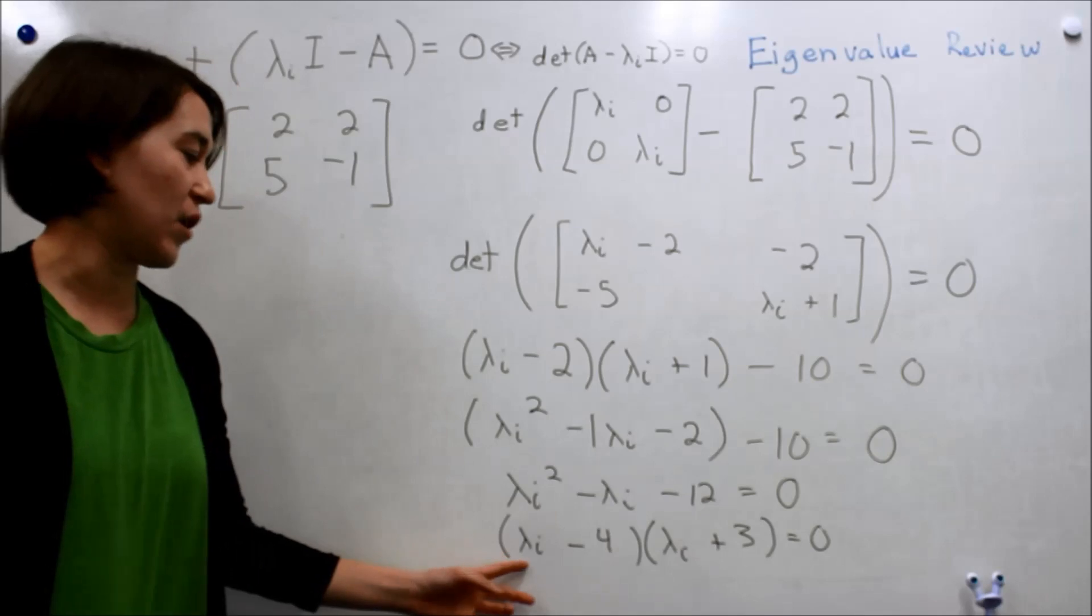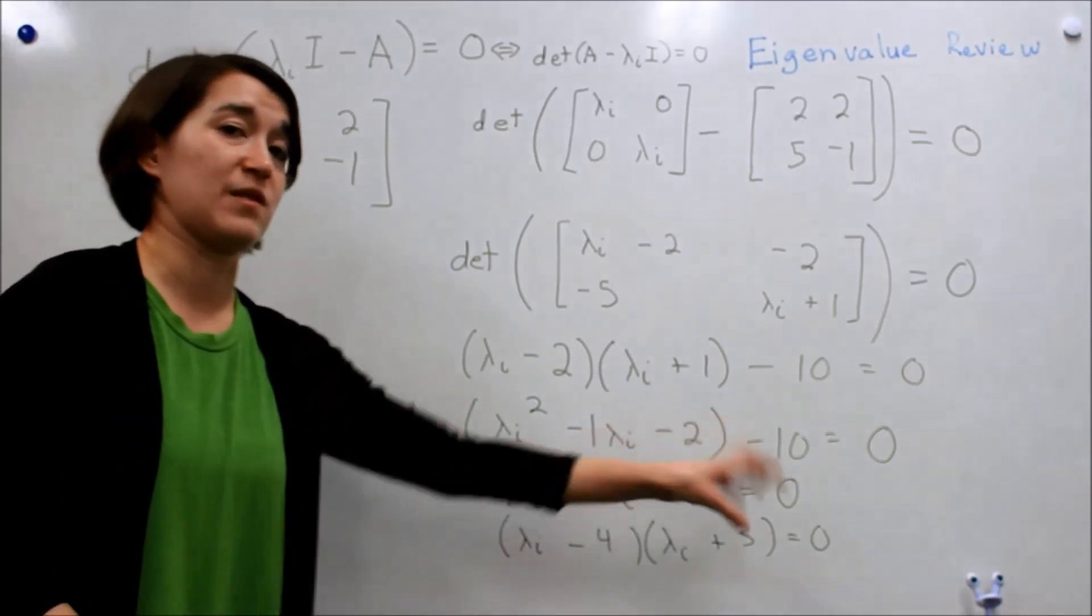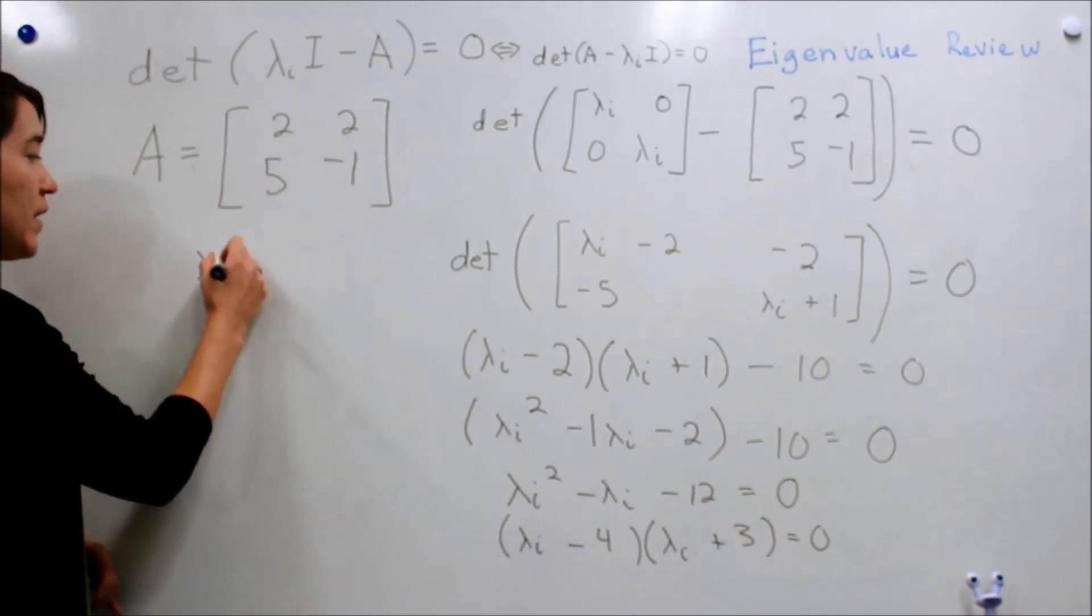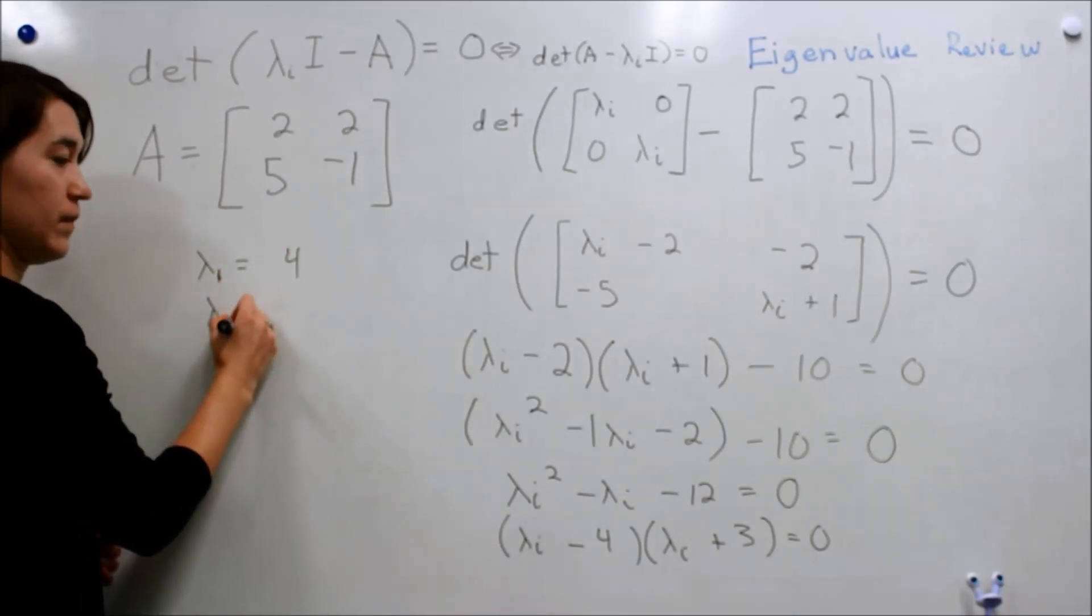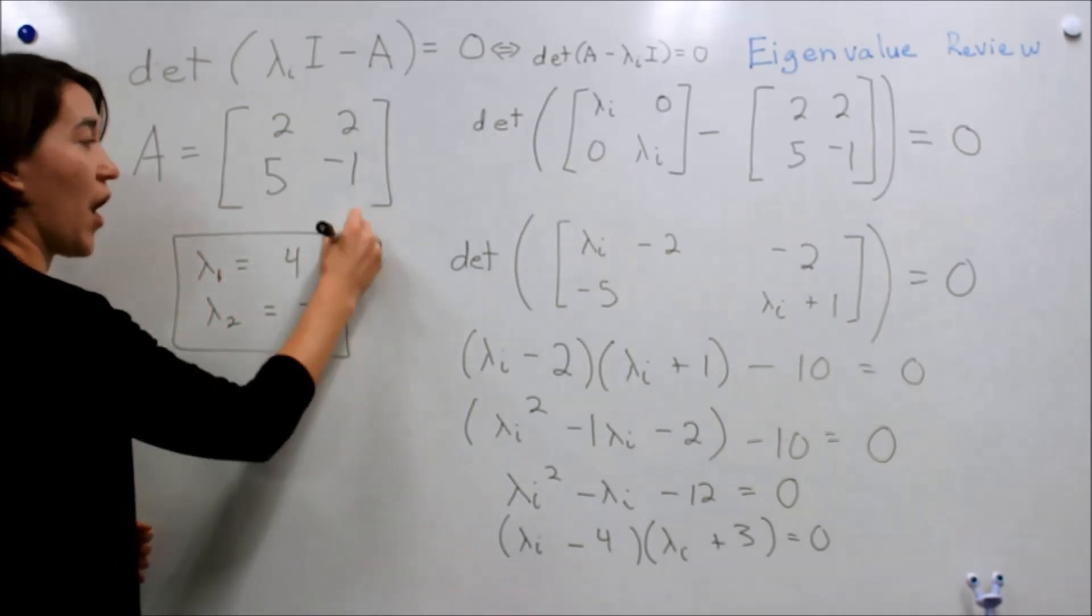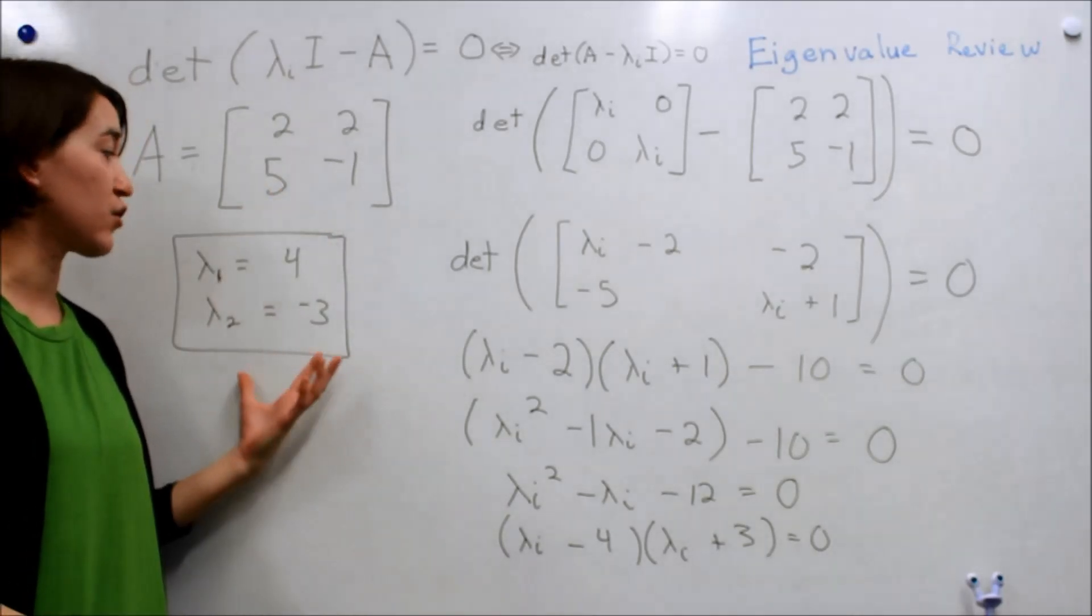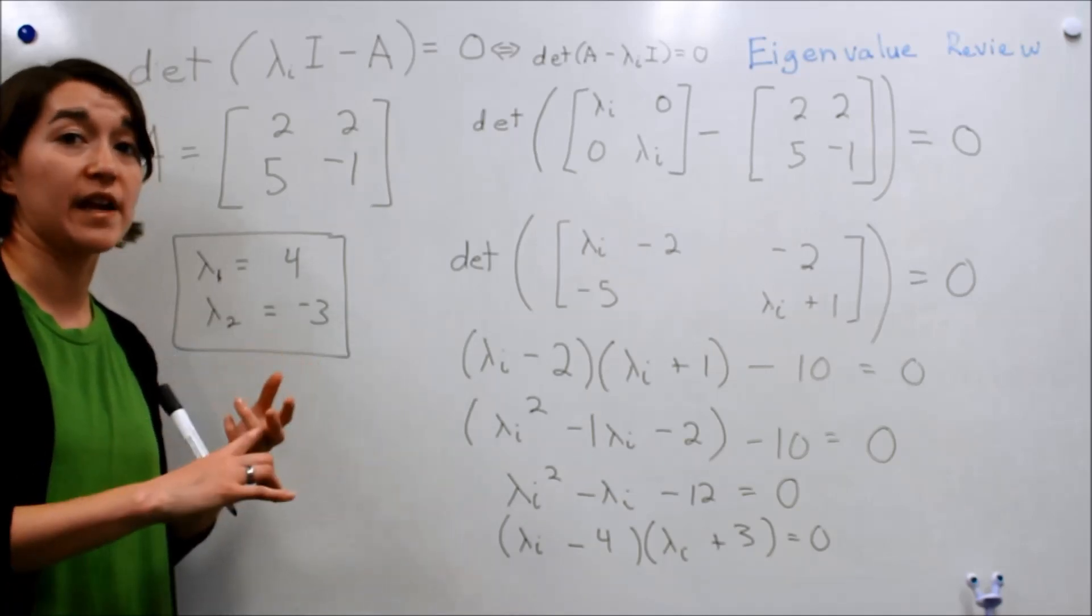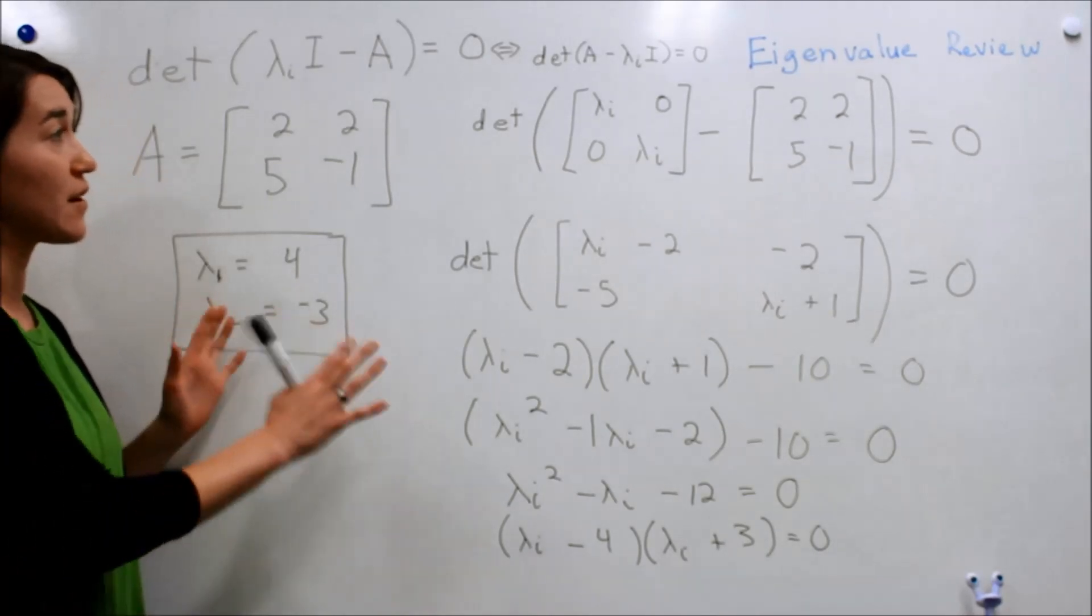So our eigenvalues are whatever values these lambdas would be to make this expression zero. So lambda 1 equals 4, lambda 2 equals negative 3. So these are our two eigenvalues for this expression. And later on in controls, we'll look at these values, we'll see if they're real, positive, negative, imaginary, and they're going to help us understand the system dynamics. But for now, that's our basic review.